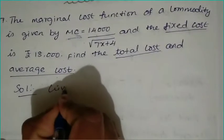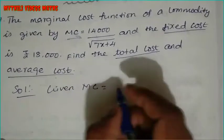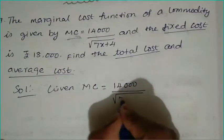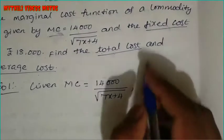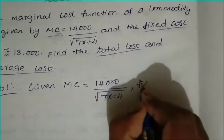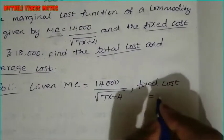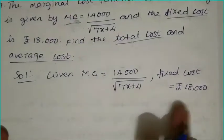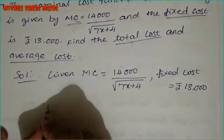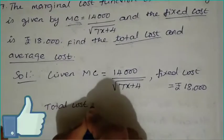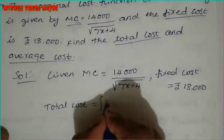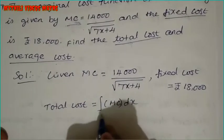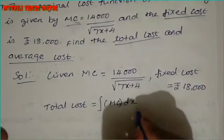First, what is given. The marginal cost is equal to 14,000 divided by root of 7x plus 4. The fixed cost is 18,000. Total cost is equal to integration of marginal cost into dx plus k, where k is a constant.